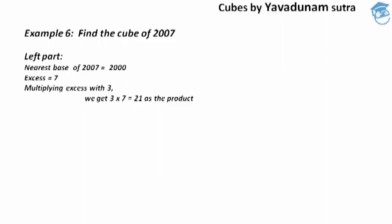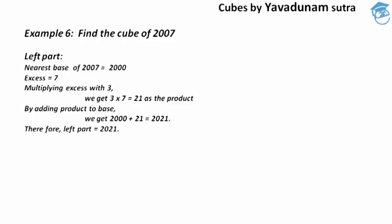After getting this product, we have to add it to the base. By adding 2000 with 21, we get 2021. Therefore this new sum, 2021, is regarded as the required left part.